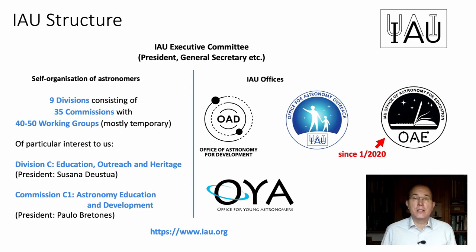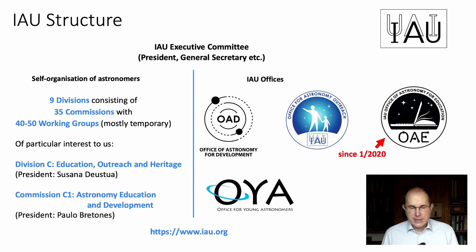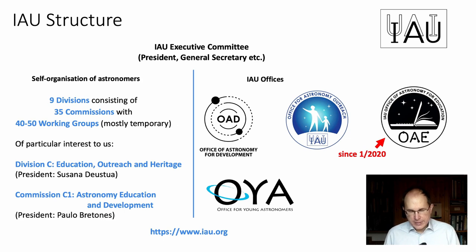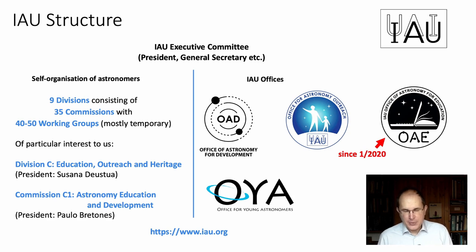Since astronomy is so rich in different topics, there are nine divisions, which consist of 35 commissions, and each commission has a specialization. Let's take the concrete example: Division C — Education, Outreach, and Heritage — is what interests us here the most, with President Susanna D'Eustua. And within that division, there is Commission C1, Astronomy Education and Development, where the astronomy education activities of the IAU happen. Paolo Bretoni is the president of that commission.